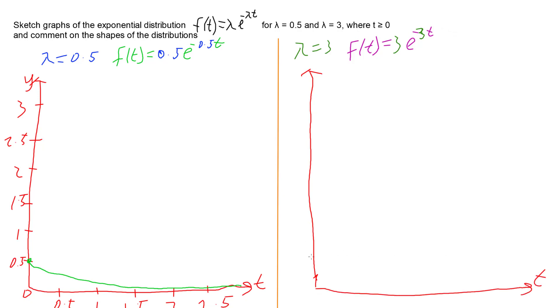So if we have a look at the other graph, so 0.5, 1, 1.5, 2, 2.5, 3, 0, 0.5, 1, 1.5, 2, 2.5, 3.